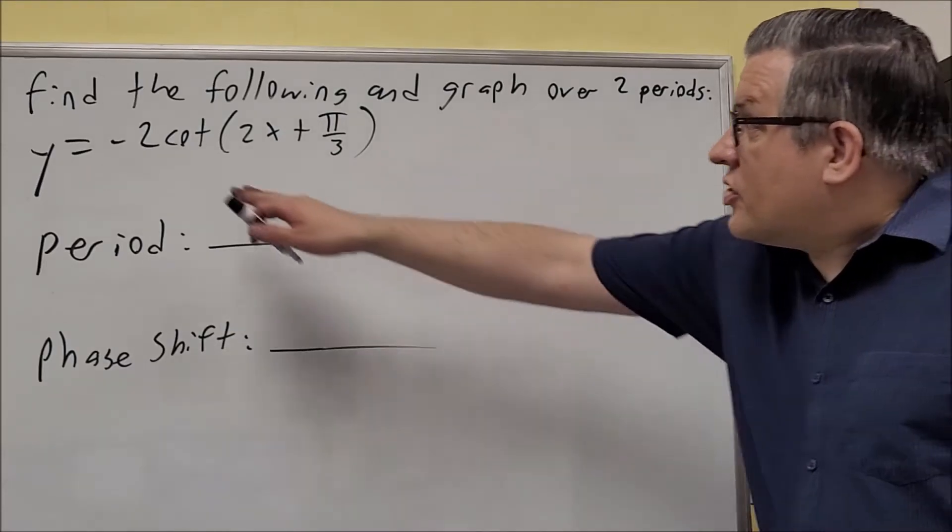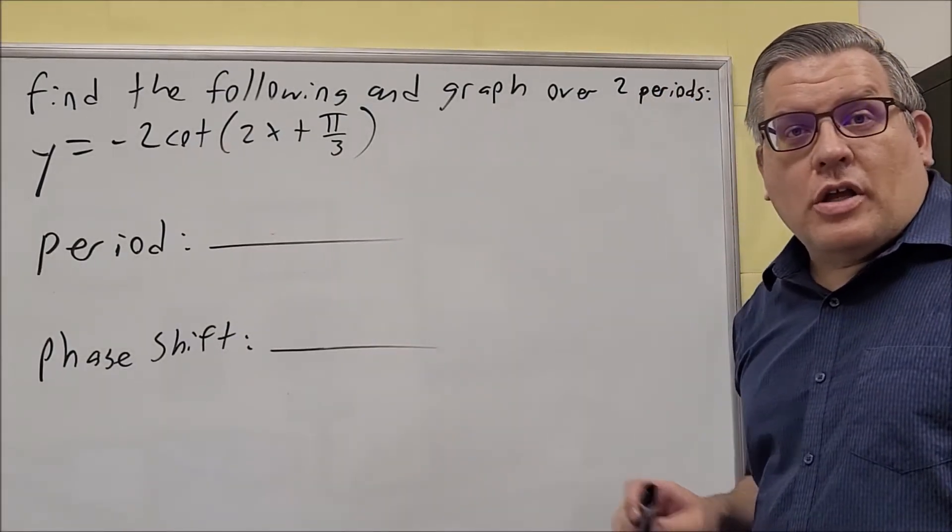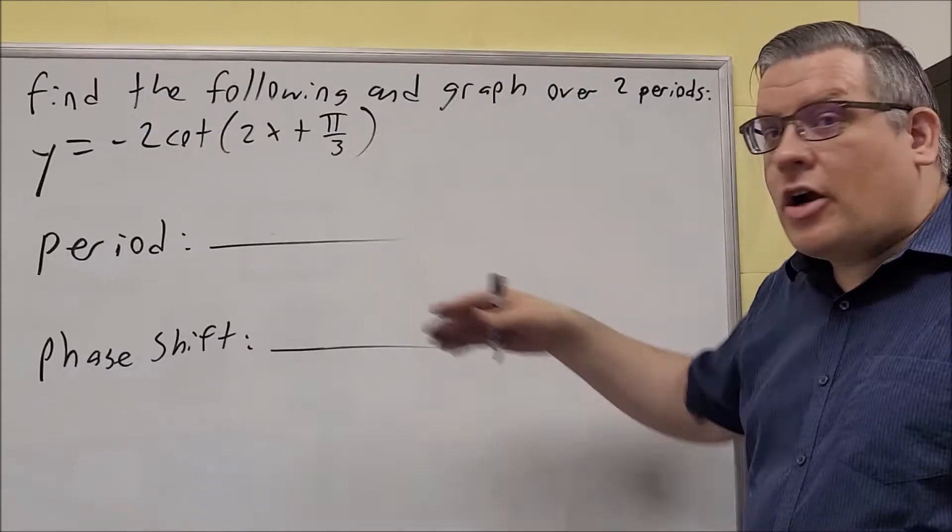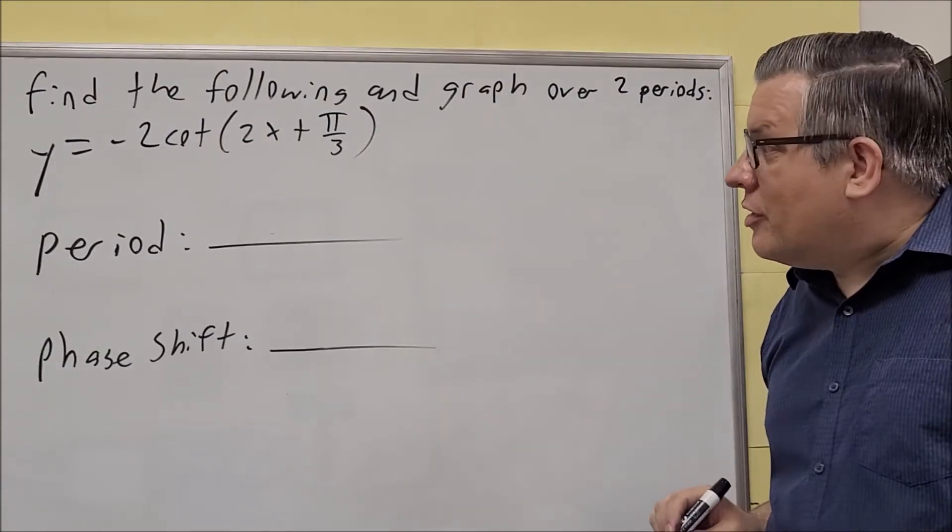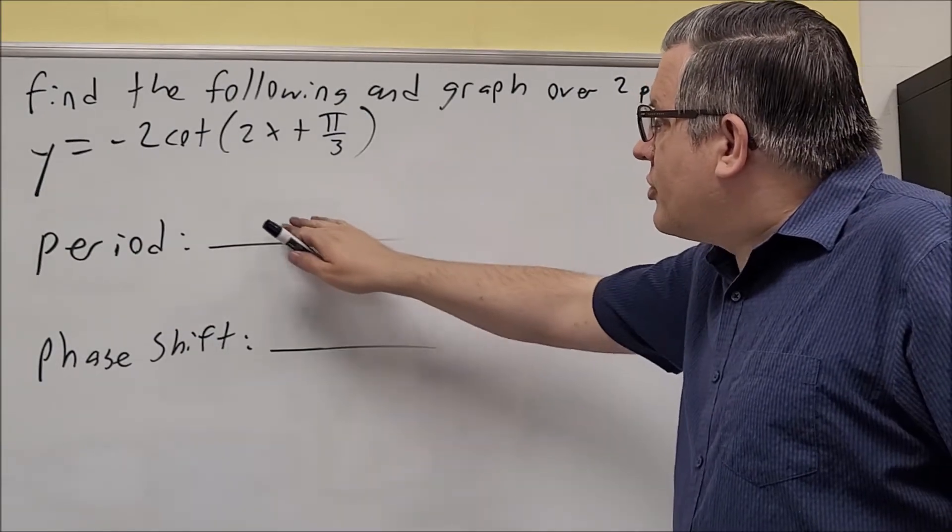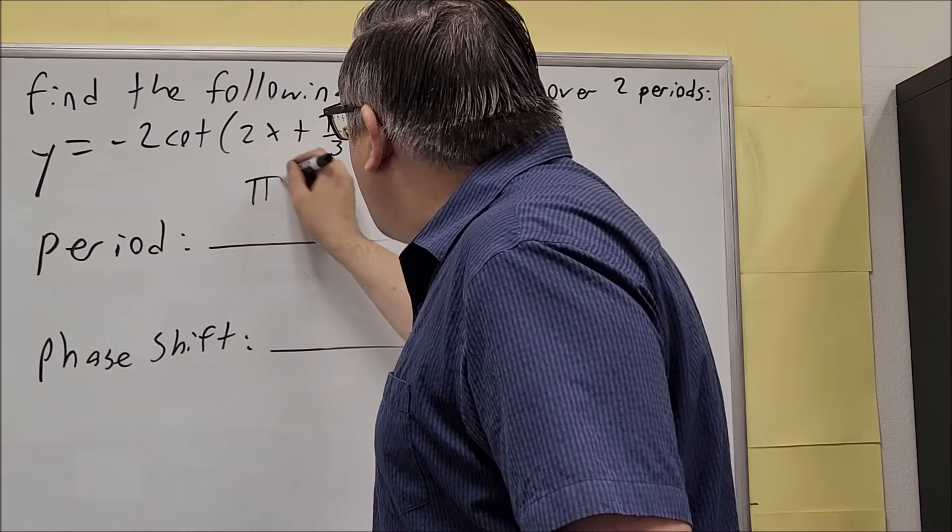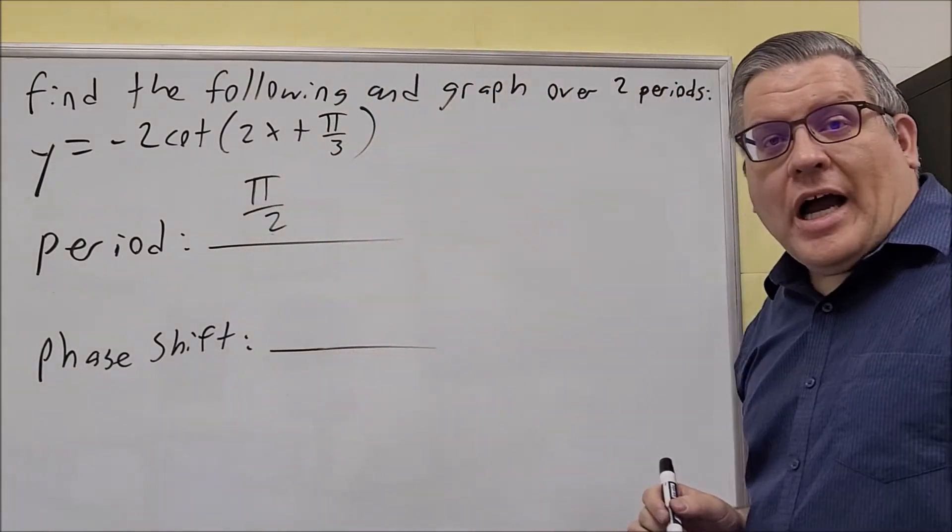For this cotangent graph, we see that there's a negative outside, so this is one that is going to be a flip, so we do have to deal with that later. Let's first find our period and phase shift. Period is always π over the number in front of the x. So in this case, it's going to be π over 2.